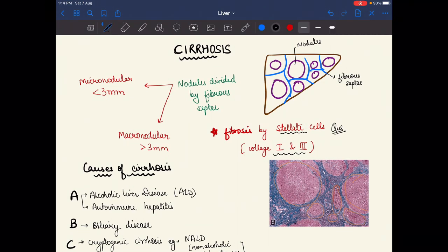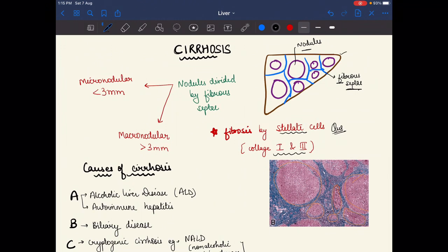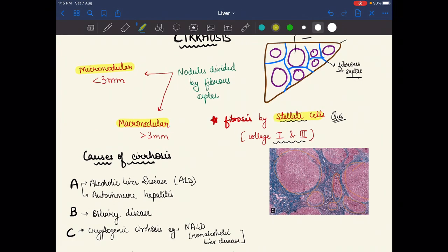This is the liver in which we see nodules, and in between the nodules we find fibrous septae. Nodules divided by fibrous septae may be micronodular or macronodular. Micro means small, less than 3 mm nodules, while macronodular means more than 3 mm nodules. In this there is fibrosis of the stellate cells. Please remember that fibrosis of stellate cells means collagen type 1 and collagen type 3 involvement.